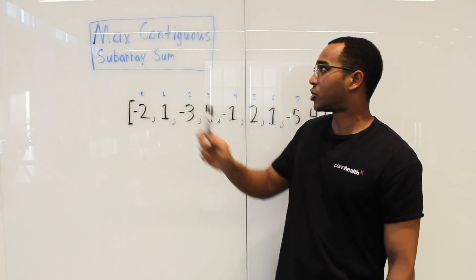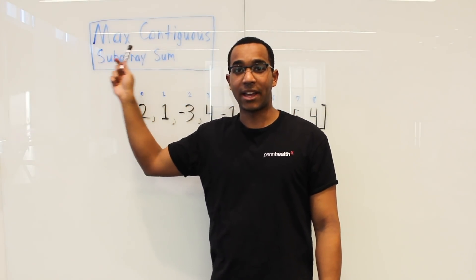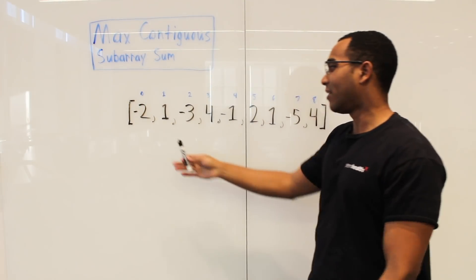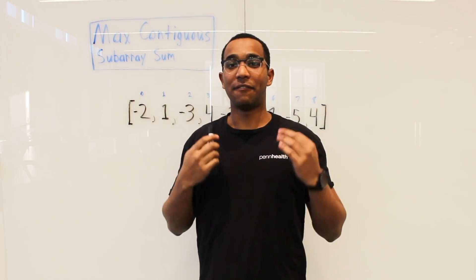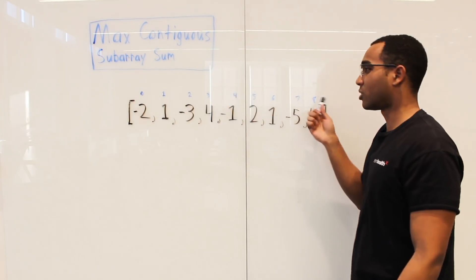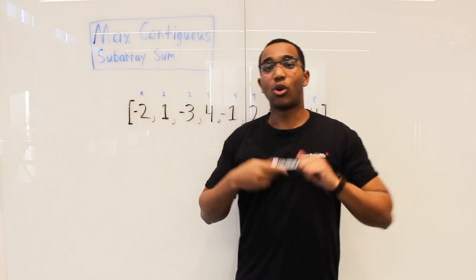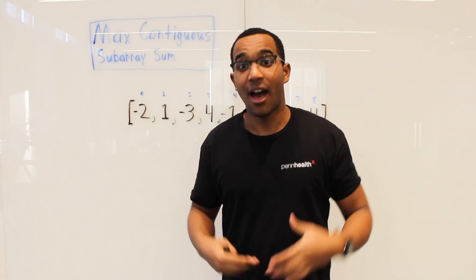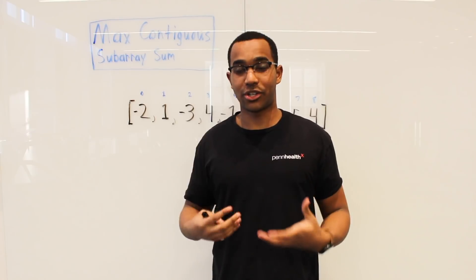Today we have the question: max contiguous subarray sum. We're given an array with positive and negative values, indexed from 0 to 8. Our question is: what contiguous subarray of the array is going to have the largest sum?